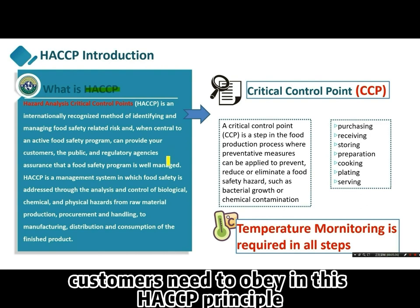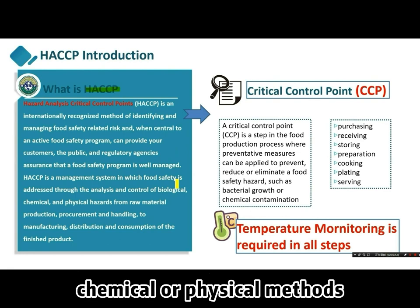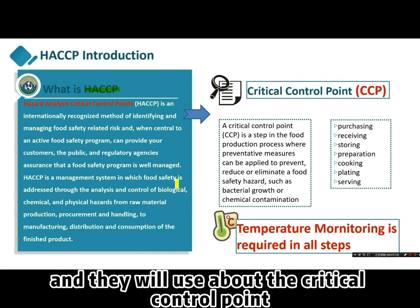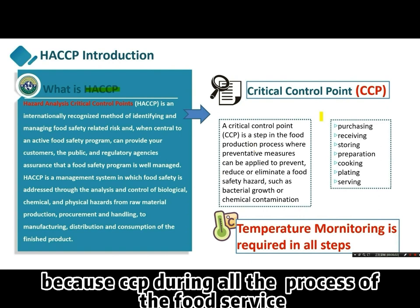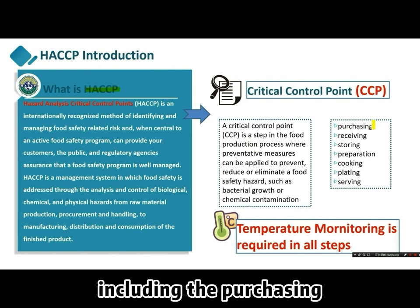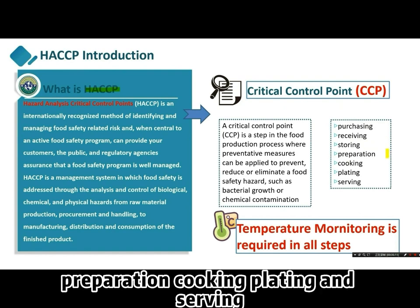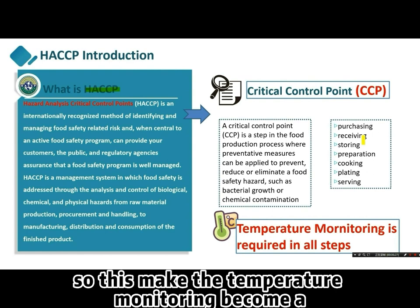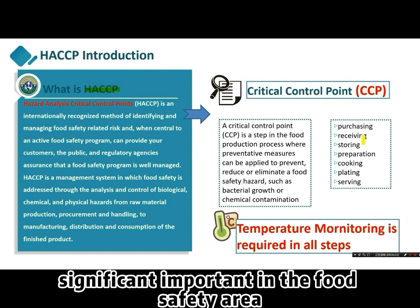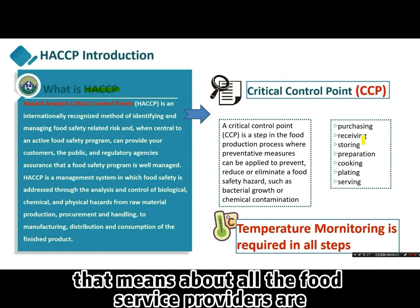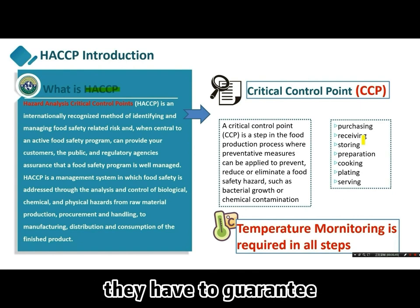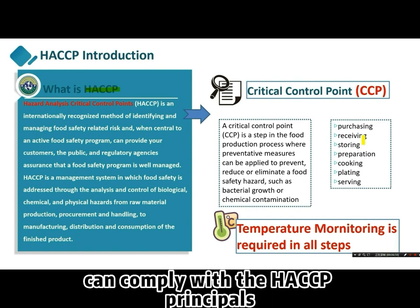Under the HACCP principle, biological, chemical, or physical methods are used to measure whether food safety standards are met. It uses critical control points, CCP, throughout all processes of the food service — including purchasing, receiving, storing, preparation, cooking, plating, and serving. In all of these steps, temperature monitoring is required, which makes temperature monitoring critically important in the food safety area. All food service providers must guarantee their systems comply with HACCP principles.